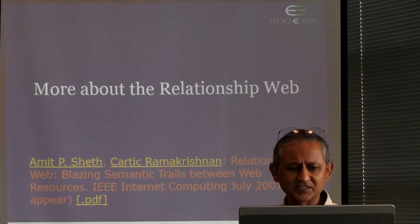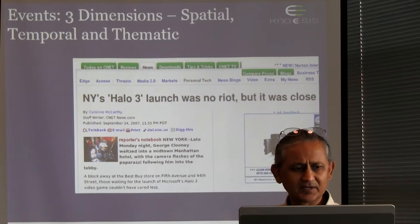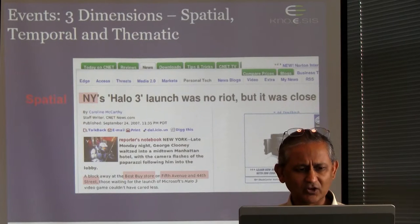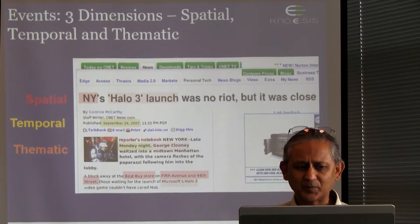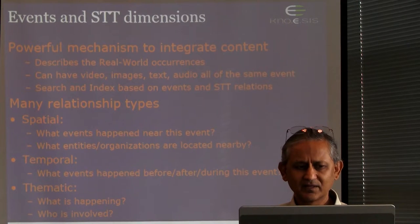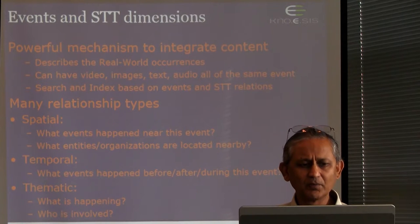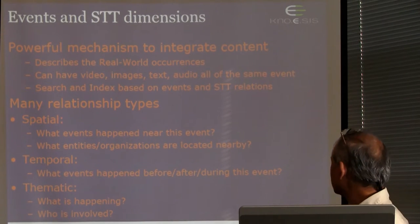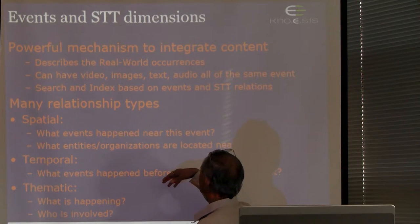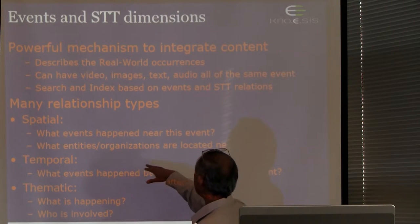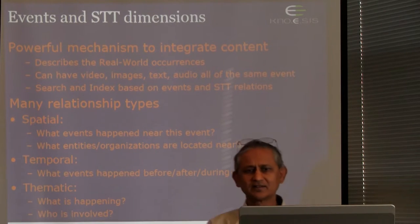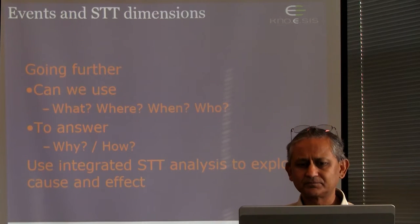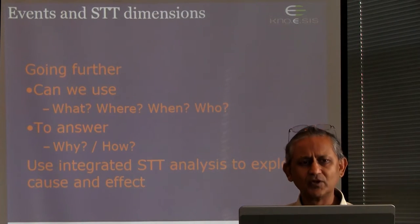Karthik and I had a paper on relationship band. On a document you can find spatial, temporal, and thematic elements — Best Buy, 5th Avenue and 44th Street (spatial), New York, Halo 3 (thematic). You can create many relationship types and extract them. Once you can do that, you can answer questions like: what events happened near this event? What entities are located nearby? What events happened before or after this event? By having richer types of metadata, you can do interesting analysis of data.